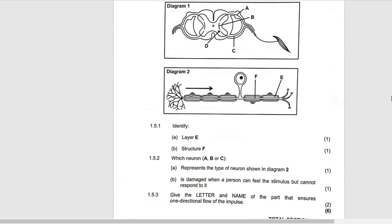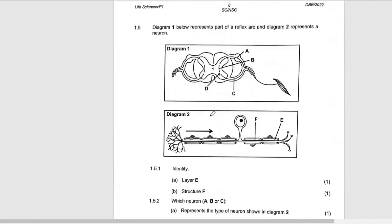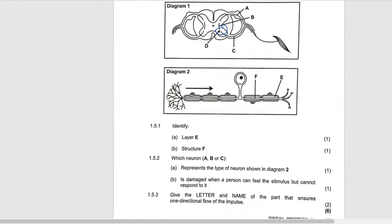Give the letter and name of the part that ensures one-directional flow of impulse. One-directional flow of impulse is done by the synapse. The major function of the synapse is to allow the impulse to move in one direction.